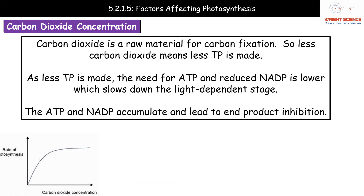Our third factor is carbon dioxide concentration. Carbon dioxide is usually not a limiting factor because the atmosphere and aquatic habitats normally provide plenty, but we'll examine what happens when it is — for example under controlled conditions. Carbon dioxide is the raw material for carbon fixation: with less CO2 we can't combine it with RuBP to make GP, so GP is not converted into TP, meaning less TP is produced.